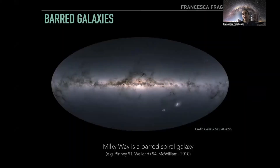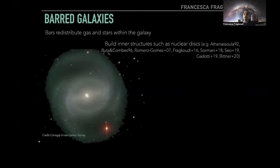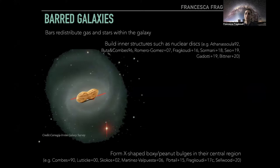The Milky Way is in fact a barred spiral galaxy. Bars can really affect the inner regions of their galaxies by redistributing gas and stars. For example, bars can cause shocks in the gas that cause it to funnel to the center through the so-called dust lanes, where it accumulates in the central region, forming structures such as nuclear disks, which are highly rotating structures found in the central regions of galaxies. Bars can also form structures called X-shaped or boxy peanut-shaped bulges that are formed due to vertical resonances in the bar themselves.